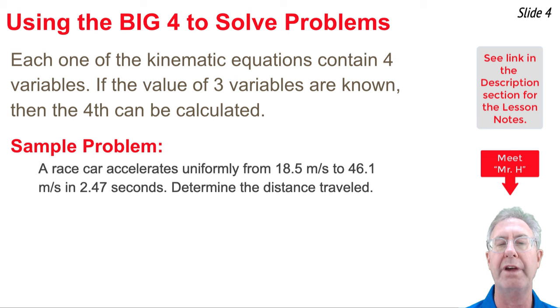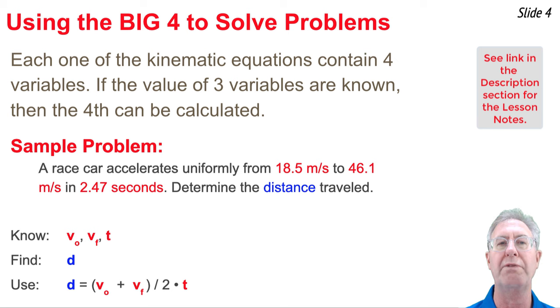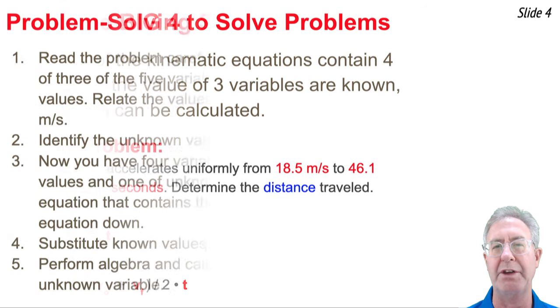You substitute known values into it and you solve for the unknown. Like here, we know 18.5 and 46.1 and 2.47. So I would relate these three known values to v original, v final, and t. And what I'm looking for is the distance. So I'm looking for an equation that has in it v original, v final, and t, the three knowns, and then d, the one unknown. And then I use that equation to solve for the unknown variable value.